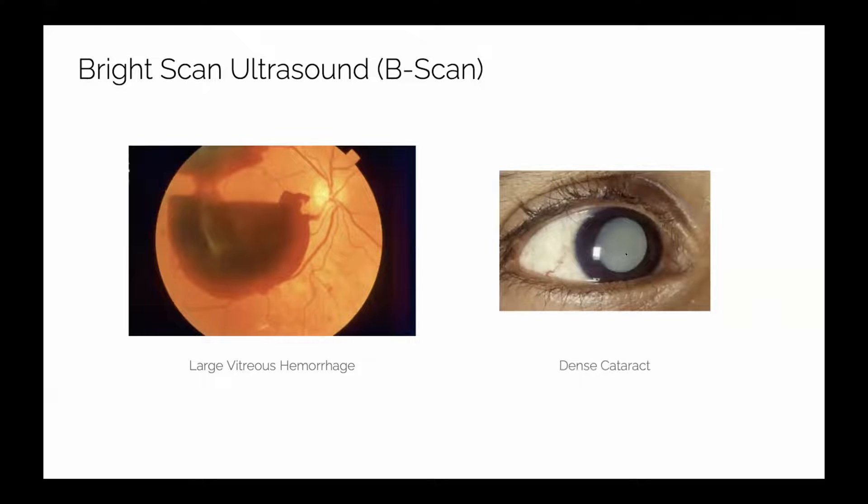Another example is a really bad cataract. A cataract is the opacification of the lens of your eye. If it gets really bad, like in this picture, it actually will not let any light through your eyeball. So the ophthalmologist can't see in the back of your eye and the patient can't see anything because the cataract is so dense.